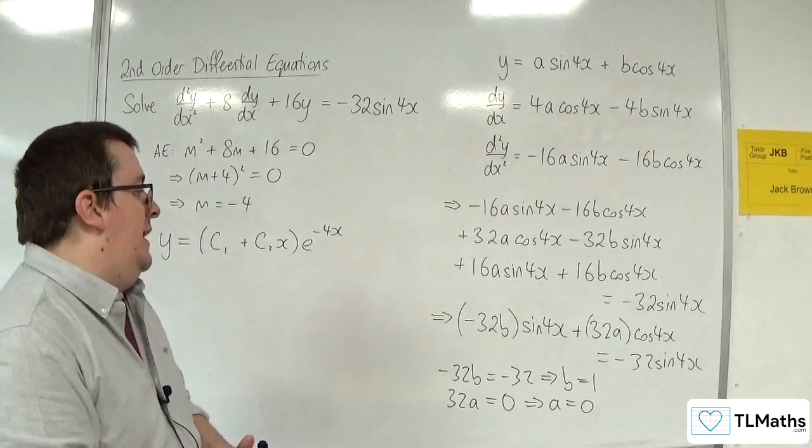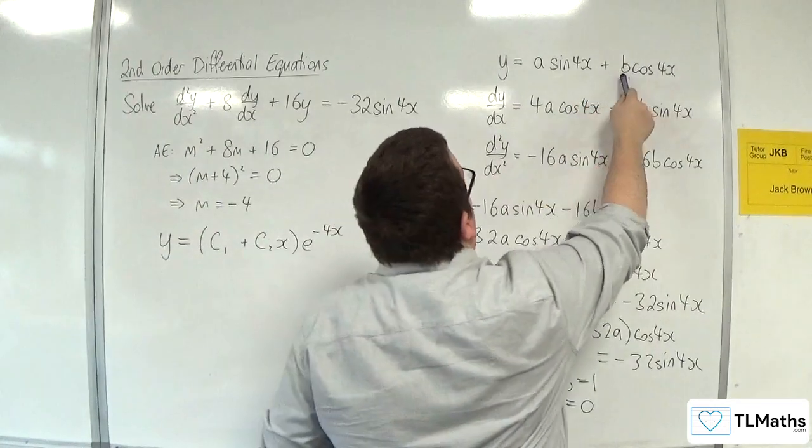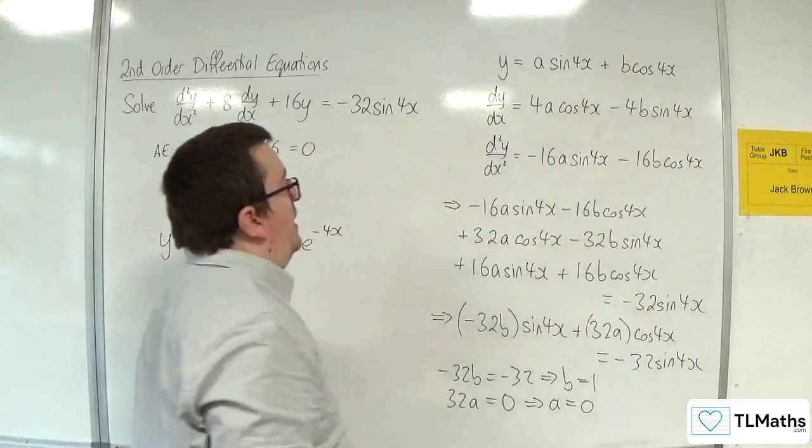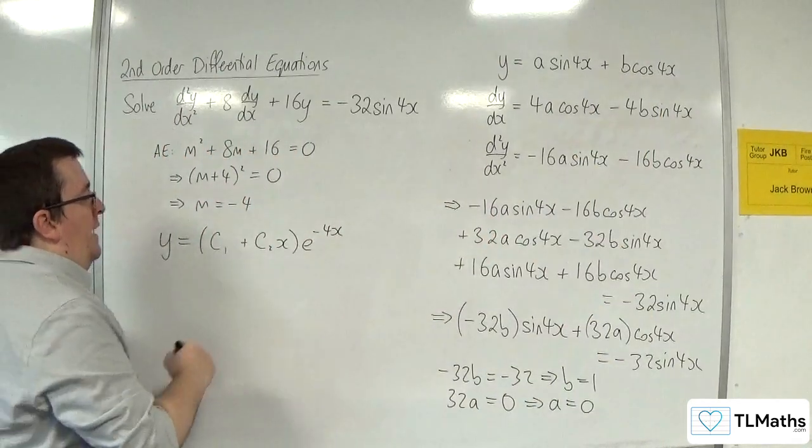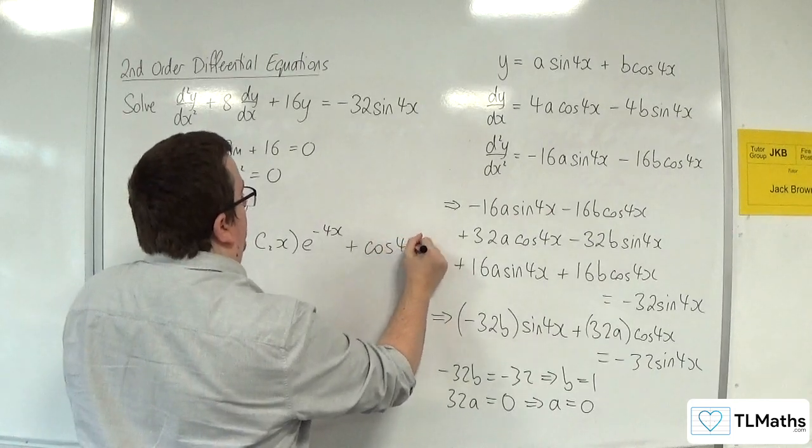So that means that we should just have y = 1 lot of cos(4x). And so that's the particular integral. So we're just going to add on cos(4x).